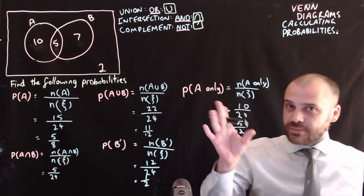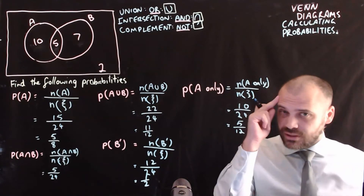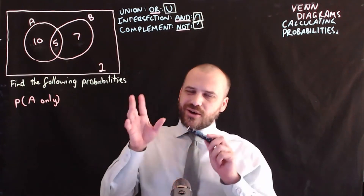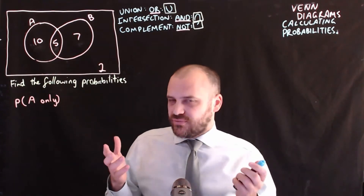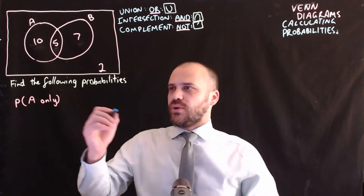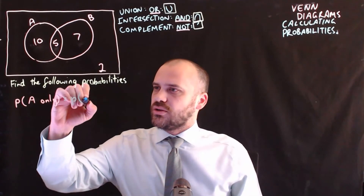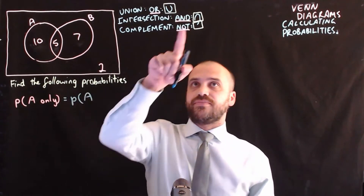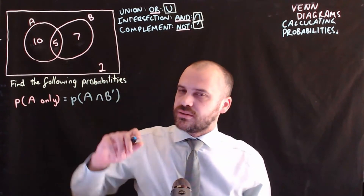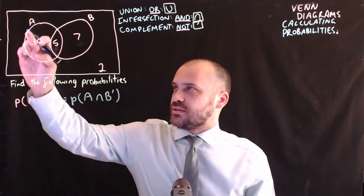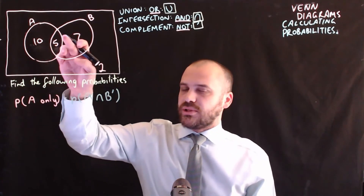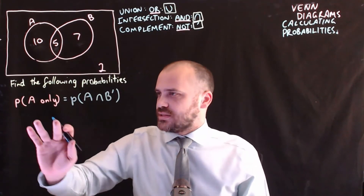Write all this down. In my last example I wrote probability of A only, but that 'only' is a bit unsatisfying because it's not using set notation. I could have written it in a different way — the probability of set A and not B — which is the same thing, just a bit fancier.